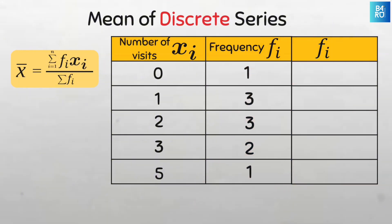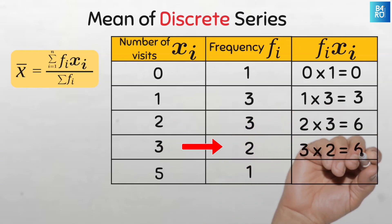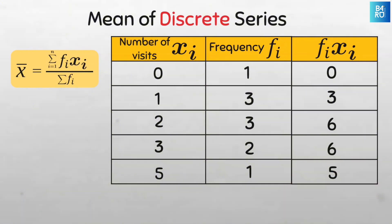So this will be zero times one which is zero, one times three which is three, two times three which is six, three times two is six, and five times one is five. Now, going by the formula, we need to sum all of these to get the sum of f of x which is our numerator. Adding all this together we will have 20.